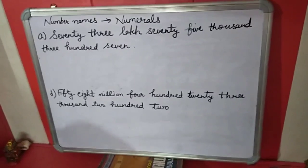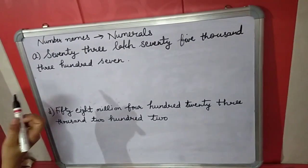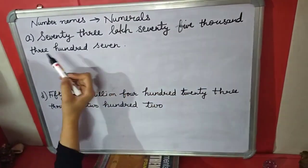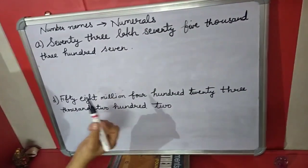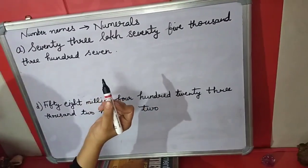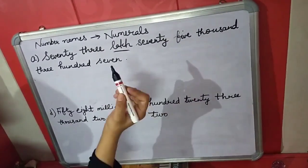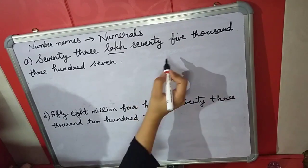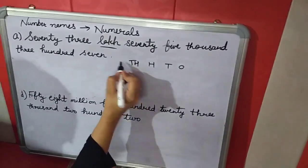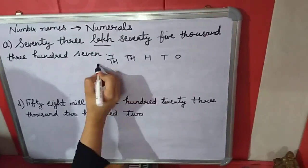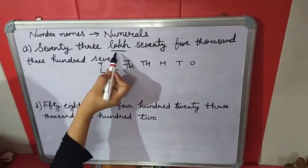Let's see question number 2 of exercise 1.1. In this question, a number name is given and you have to convert the number name into a numeral. As you know, the place value table has lakh, so we will use the Indian number system. We will write in short form: 1s, 10s, 100s, 1000s, 10,000, lakhs, 10 lakhs, and here we have 73 lakhs.